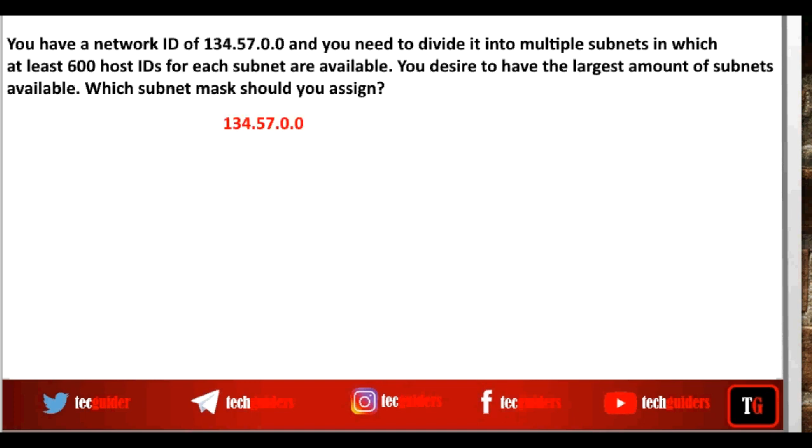The given network address is 134.57.0.0. First of all, identify the class to which this address belongs to. The first octet is within the range 128 to 191. Hence it belongs to class B. And hence the first two octets identify the network.